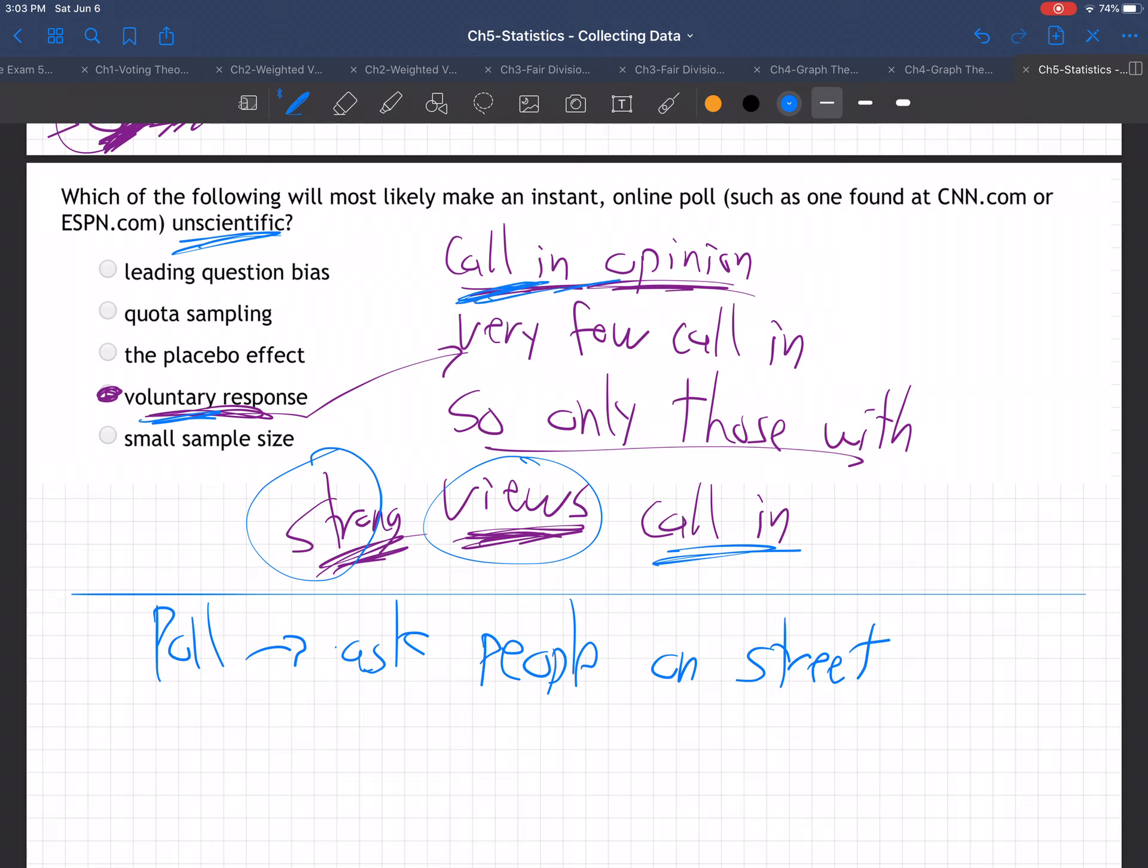If you just say, 'Call into the show and tell me your opinion,' most regular people are not going to call in. You're only getting a voluntary response. Whereas when they come up to you on the street, you didn't volunteer, but you're probably not going to just walk away since they're being nice. You'll give them your opinion, even though you don't feel strongly.